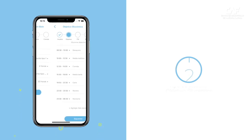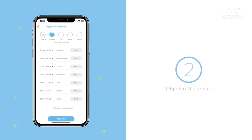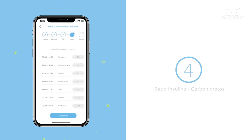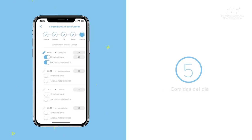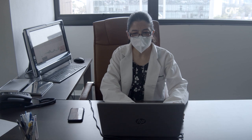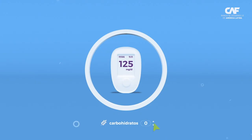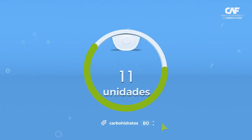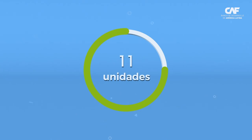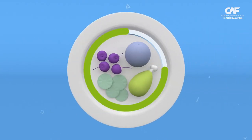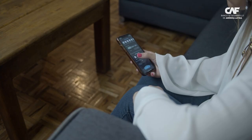Social Diabetes es una plataforma de gestión digital de la diabetes compuesta de dos elementos: una aplicación móvil para los celulares de los pacientes que les permite tener la diabetes bajo control y tener una vida más flexible y más segura. Por otro lado, la plataforma web permite a los profesionales de la salud gestionar remotamente a estos pacientes y hacer un uso de los datos para entregar una asistencia más personalizada y más eficiente.